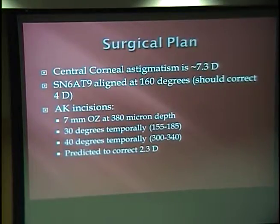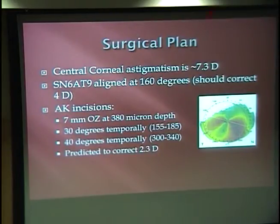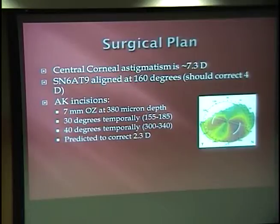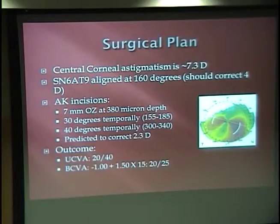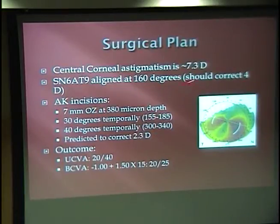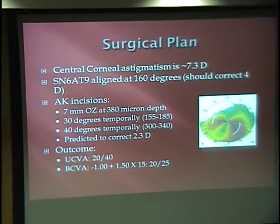I did not want to be too aggressive on the AKs at a 7mm optical zone, because if you do too much you can destabilize the cornea, especially in a patient with PMD. So conceptually, what we did was take this cornea, insert the lens along this axis, and do AK incisions at the maximal areas of astigmatism. That resulted in an uncorrected visual acuity of 20/40 and best correction of 20/25 — very close to our target. So: 7.3 diopters, take away 4.1 with the toric, take away another 2.3, left with about 1.5, as you'd expect.